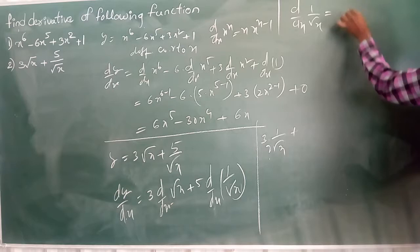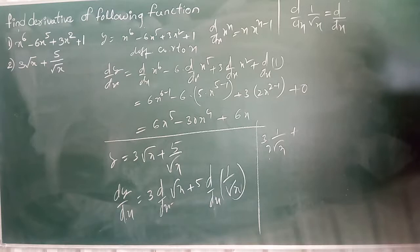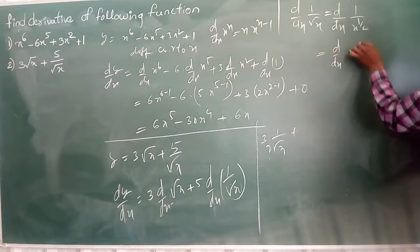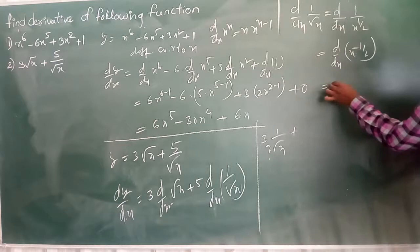That is equal to dy by dx of 1 by x power 1 by 2. This is also we can write dy by dx of x power minus 1 by 2. Now, this is in the form of like this.